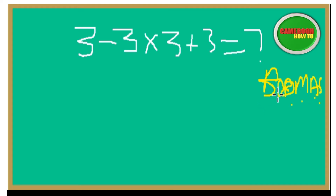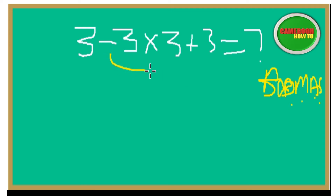Following BODMAS, there's no bracket, so we move to the order of operation. The first thing is division — there is no division. The second thing is multiplication, so what are we multiplying? We are multiplying negative 3 times 3.